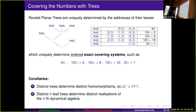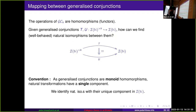Distinct trees determine distinct homomorphisms, so our operad is isomorphic to the formal operad of rooted planar trees — given by plugging trees together — and distinct trees determine distinct realizations. So the elements, these generalized conjunctions, are homomorphisms.